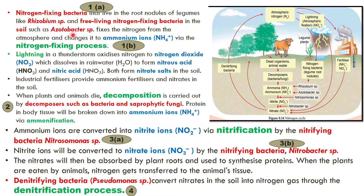These two types of nitrogen-fixing bacteria — Rhizobium in root nodules and Azotobacter free-living in the soil — their role is to fix nitrogen from the atmosphere and convert it into ammonium ions (NH4+). This process of converting nitrogen gas to ammonium ions is called the nitrogen-fixing process.